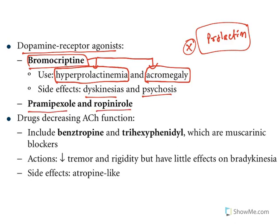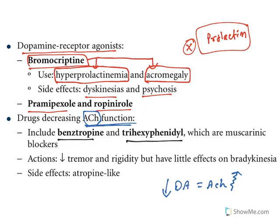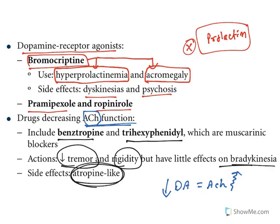Other dopamine agonists include pramipexole and ropinirole. Now, drugs acting on acetylcholine function: as mentioned, there is a smooth balance between dopamine and acetylcholine. In Parkinson's disease, dopamine levels are reduced, so acetylcholine effects are exaggerated. To treat that, anticholinergics like benzatropine and trihexyphenidyl are used. They reduce tremor and rigidity, but they cannot treat bradykinesia. Side effects are anticholinergic — atropine-like actions will be present.